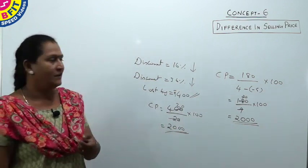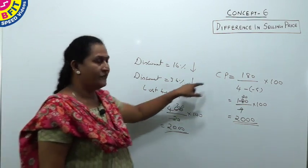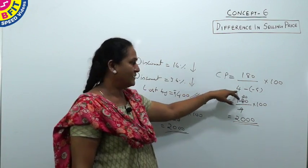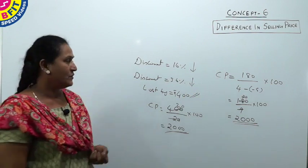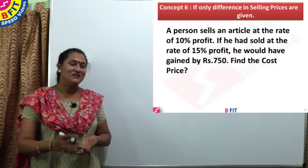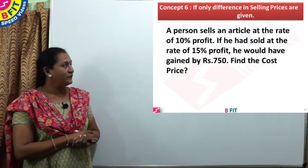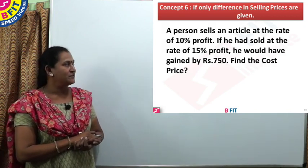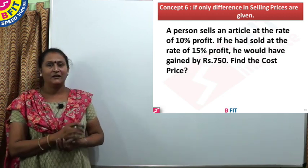Instead of complicating the working, read the question and understand it. If a difference in selling price is given, divide it by the difference in profit percent to get the cost price. We will now see how to work out a question using this concept. The question is: a person sells an article at 10% profit.